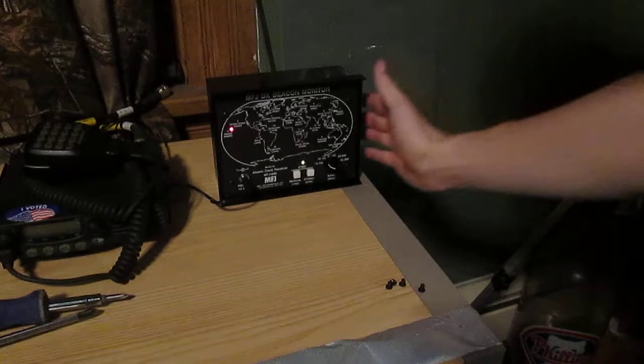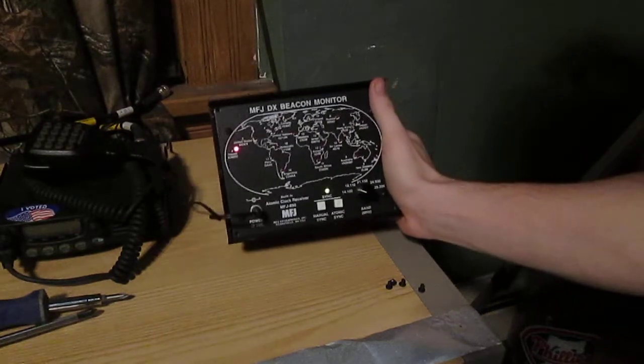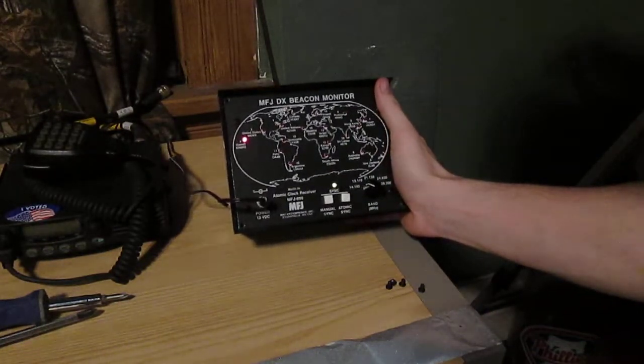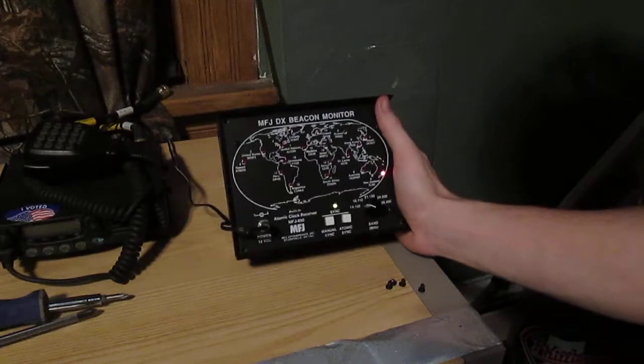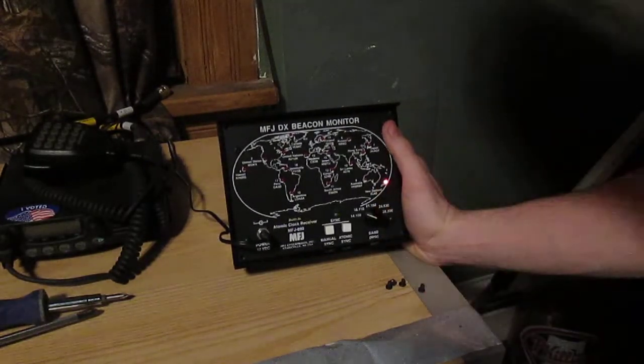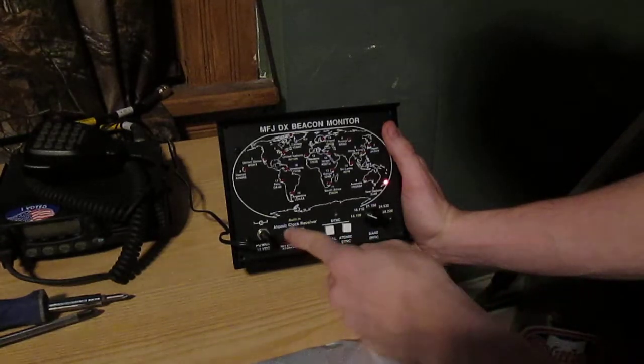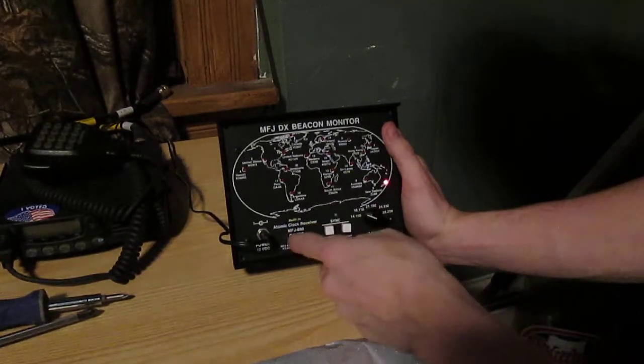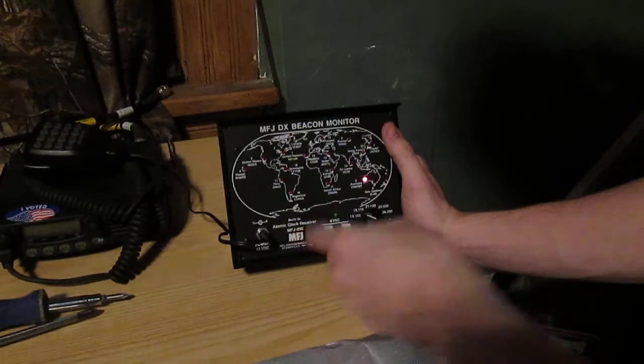Alright, today I'm going to be doing a video on the MFJ DX Beacon Monitor. For those of you that are wondering, I'll explain it to you in a nutshell. It has a built-in atomic clock receiver, the MFJ890.